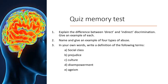Finally, without looking at the other slides, do a quick quiz and memory test. Pause the PowerPoint and answer these questions by yourself first. Number one: explain the difference between direct and indirect discrimination and give an example of each. Number two: name and give an example of four types of abuse. Number three: in your own words, write a definition of the following terms — social class, prejudice, culture, disempowerment, and ageism. Once you've done that, keep your notes for the next lesson. Good luck and I shall see you soon.